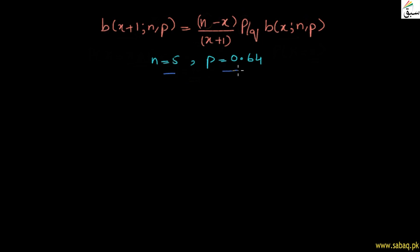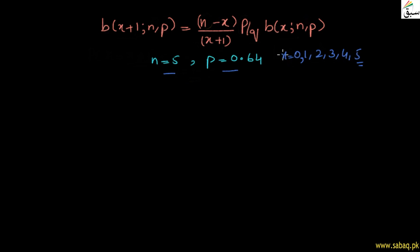Since n equals 5, x takes values 0, 1, 2, 3, 4, and 5 in the binomial distribution. First, we need to compute P(X = 0) directly using the binomial formula. After that, we will use the recurrence formula to find P(X = 1), 2, 3, 4, and 5.